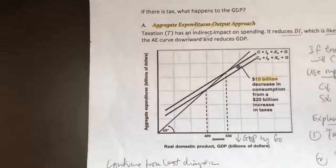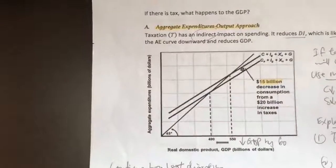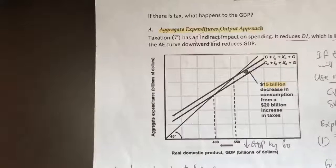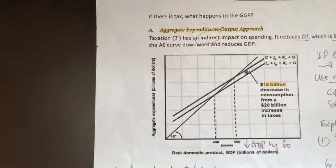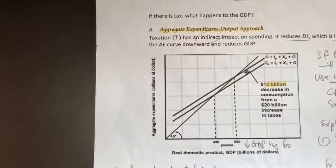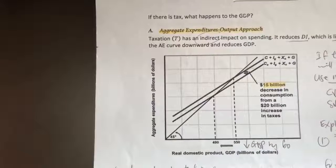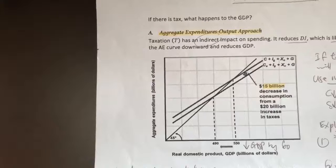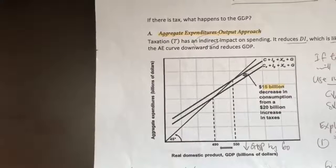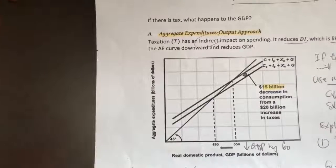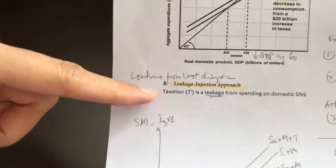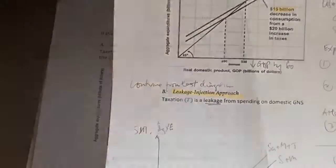Now let's look at what happens to real GDP when there's a change in taxation. Like before, we're going to look at how to determine the new equilibrium GDP using two methods: the aggregate expenditures and output approach, and the leakage injection approach.